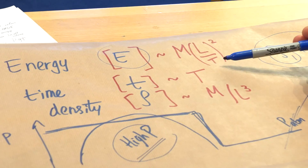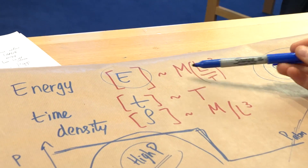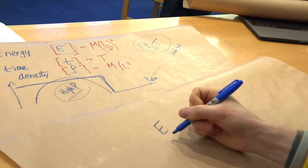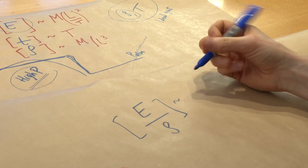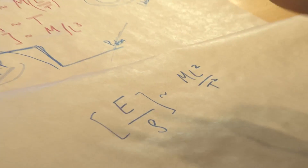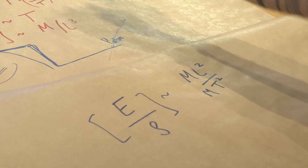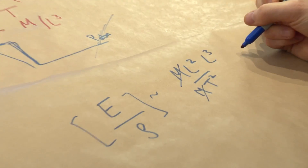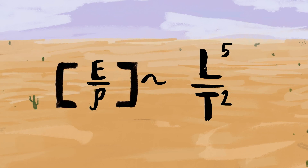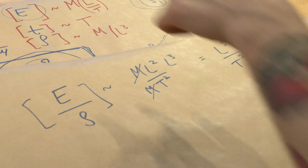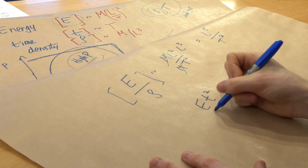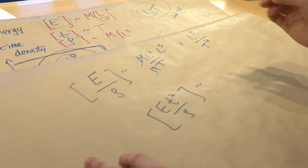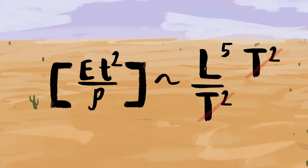All we have to do is combine the three sets of units to get just length. We start by removing mass: energy E divided by density rho gives units of ML²/T² divided by M/L³ — the M's cancel, leaving L⁵ over T². We've got rid of mass, but we still have time. So we multiply by time squared on the top; the T² terms cancel and we're left with just L to the fifth.